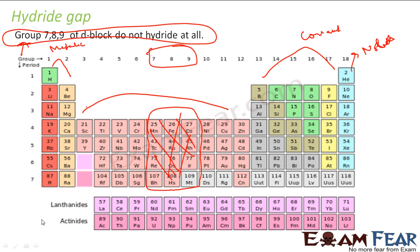Apart from that, starting from group 1 to group 17, all of these form hydrides. Groups 7, 8, and 9 don't form hydrides, and that's why there's a discontinuity — we call it the hydride gap.